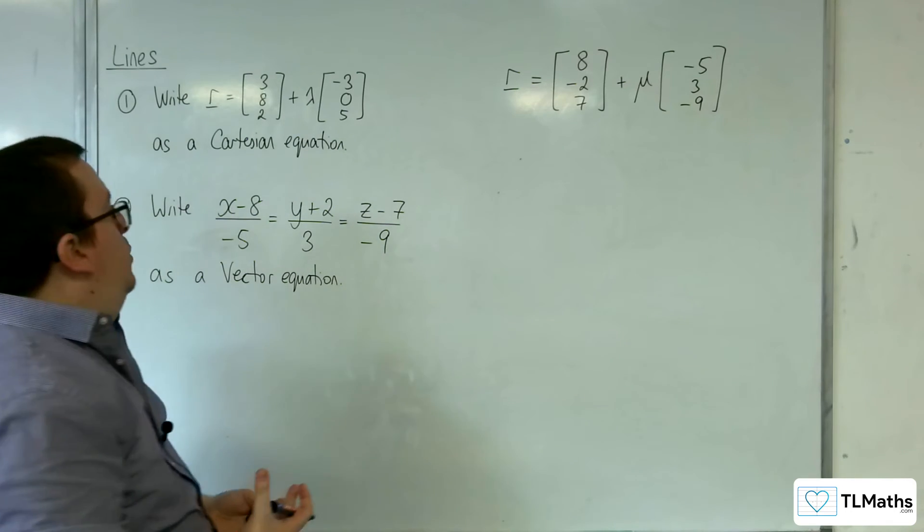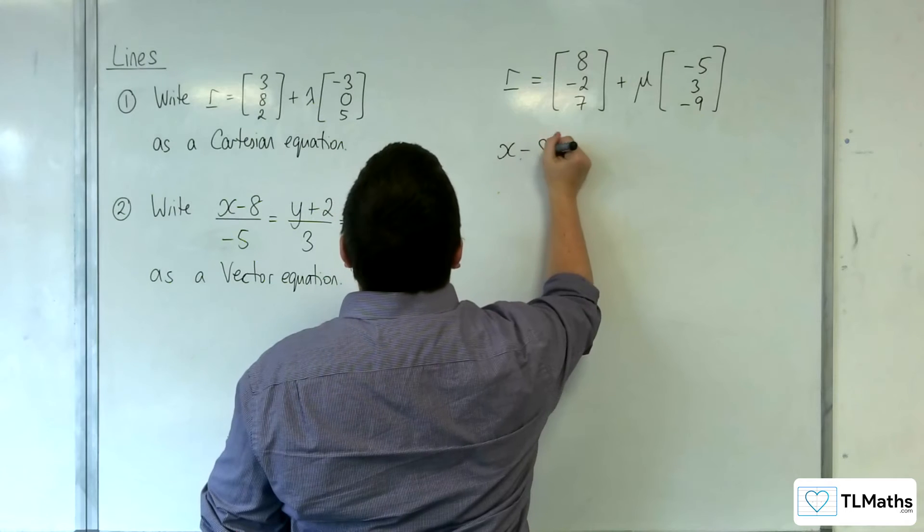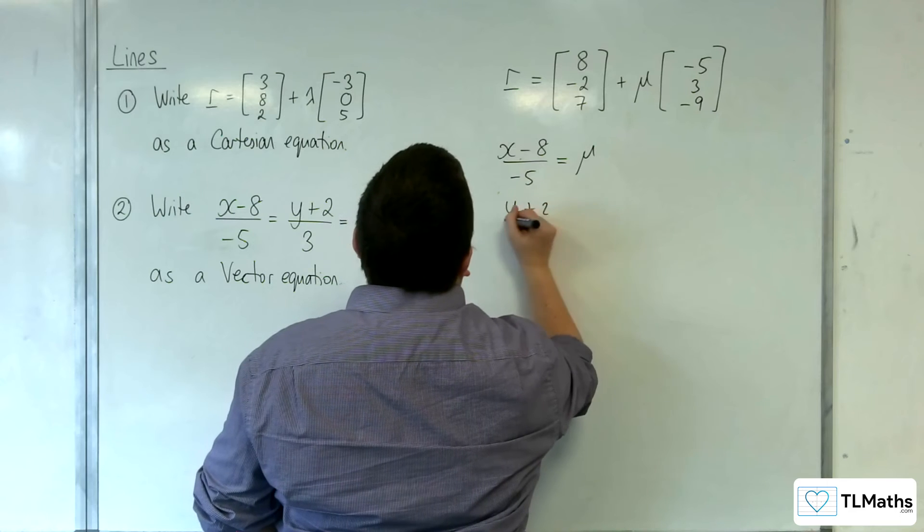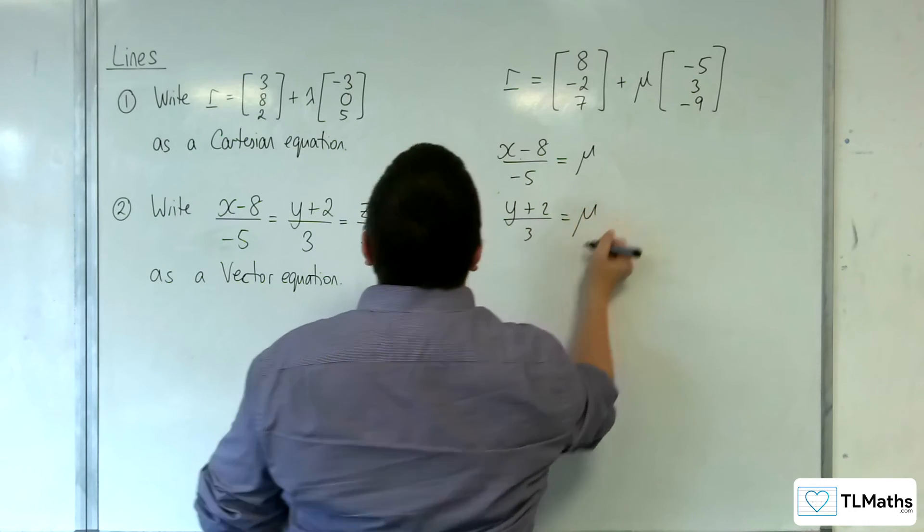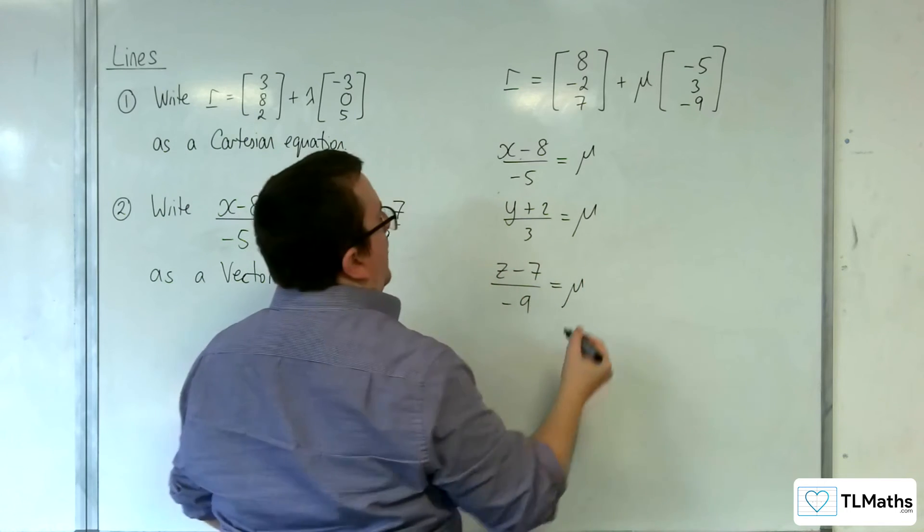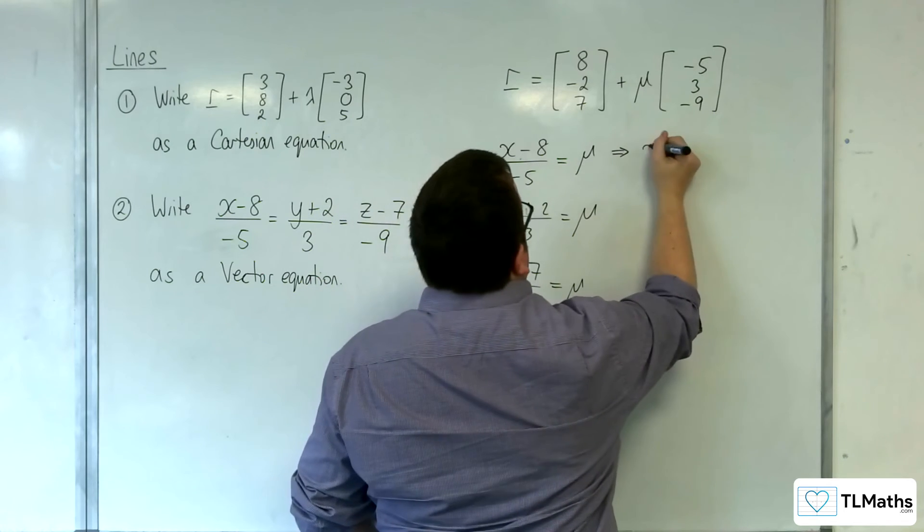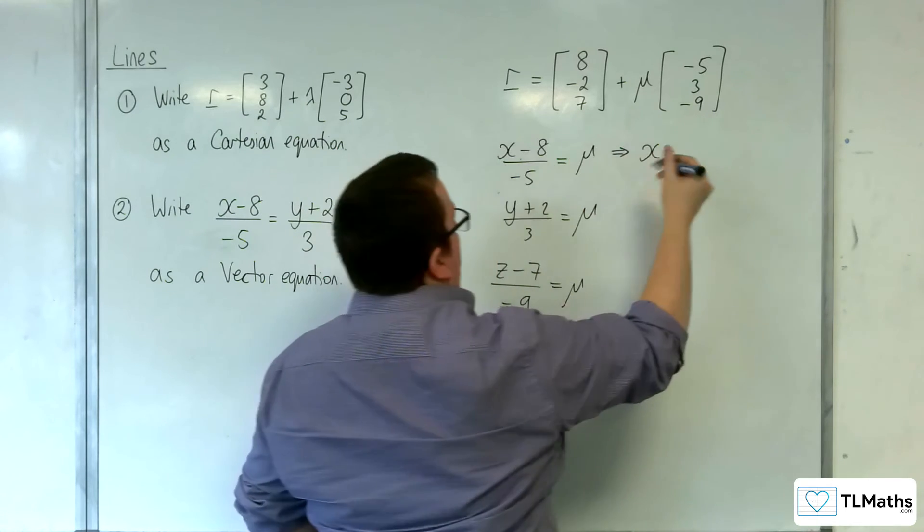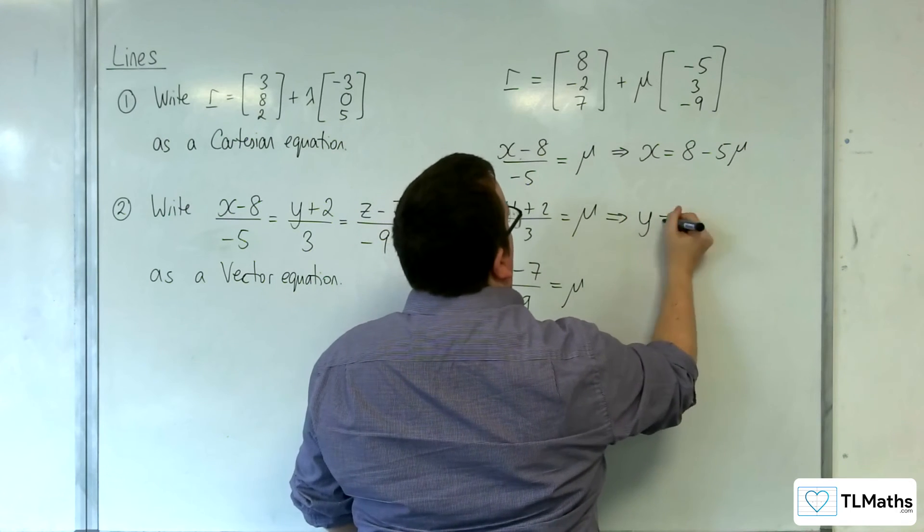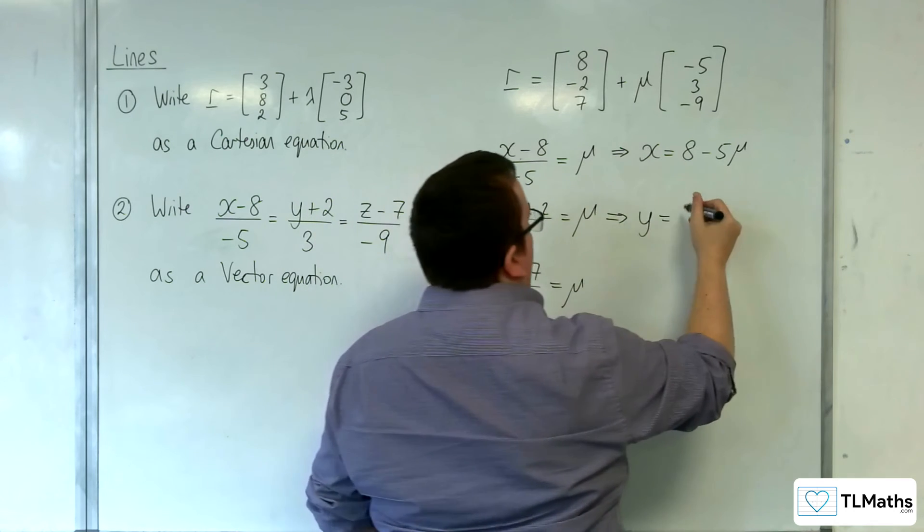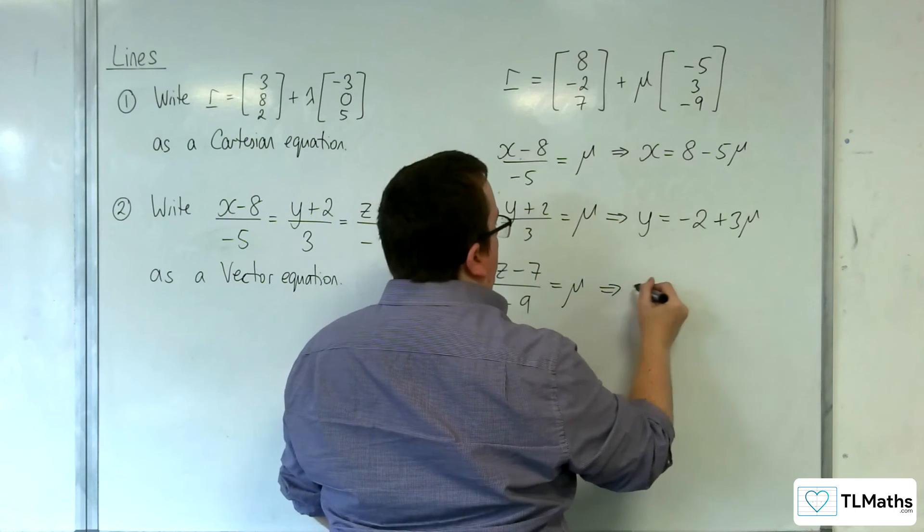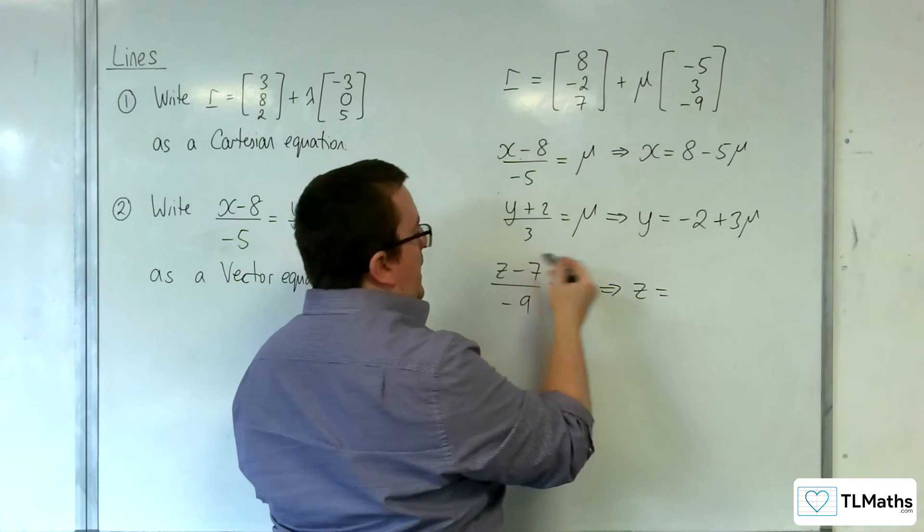If you want to go about it in a more long-winded way, so you would say x take away 8 over minus 5 is equal to mu. y plus 2 over 3 is equal to mu. And z take away 7 over minus 9 is equal to mu. Rearrange this to get x equals. So multiply it by the minus 5, add on the 8. So 8 take away 5 mu. Then y is equal to, multiply it by the 3, subtract 2. And then z is equal to, multiply it by the minus 9, add on 7.